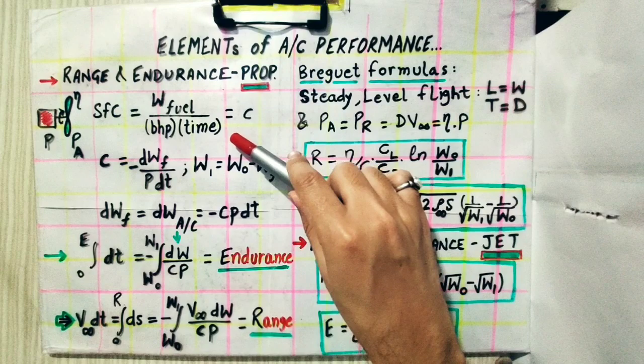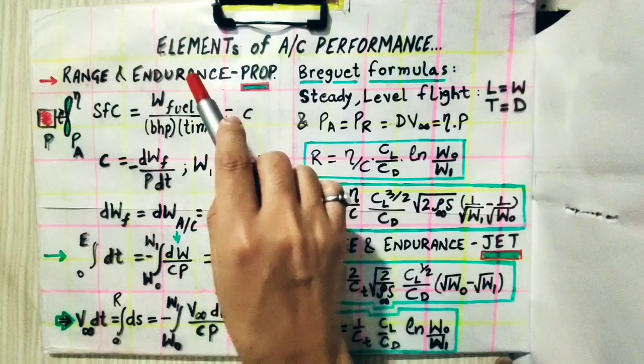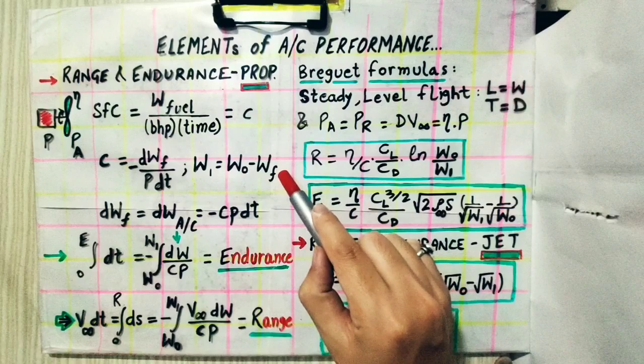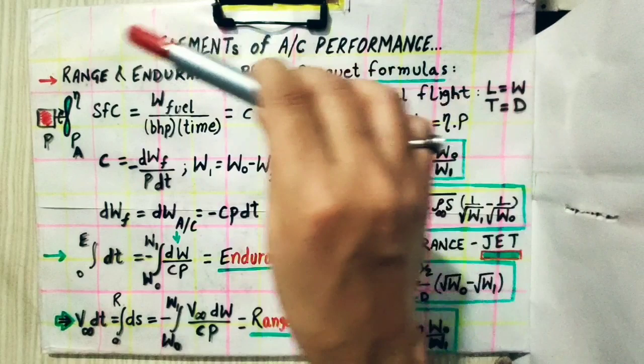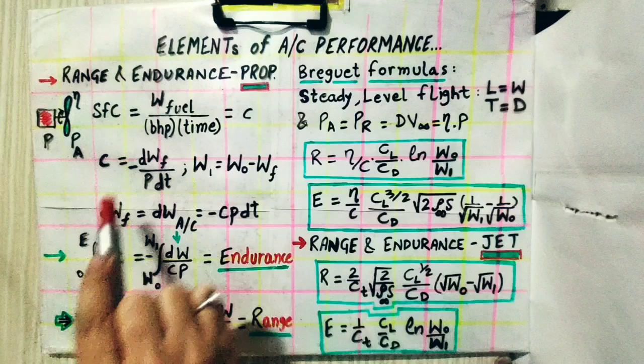Endurance is the amount of time the airplane can stay in the air for a given amount of fuel. So range is about distance covered, while endurance is about time aloft — both for a given fuel load.